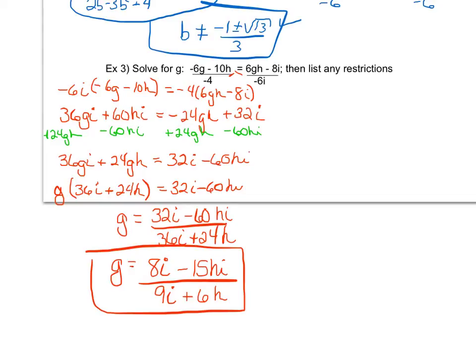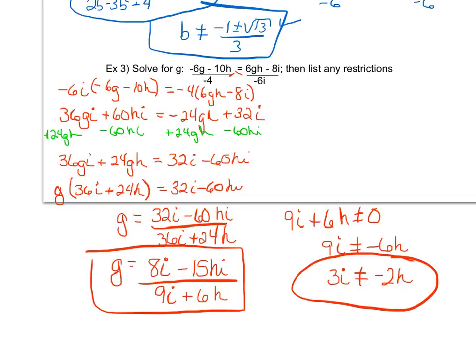Listing my restrictions, I would say that 9i plus 6h cannot equal 0, therefore 9i cannot equal negative 6h. Both of these can be reduced by 3, saying 3i cannot equal negative 2h. If I wanted to, I could state one variable in terms of the other. For example, I could say i cannot equal negative 2 thirds h, or I could say h cannot equal negative 3 over 2i. I'm going to go ahead and leave it like this, but just know that I could state one variable in terms of the other. But again, simplest form and restrictions.